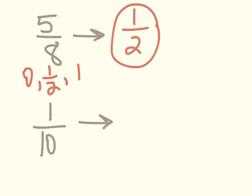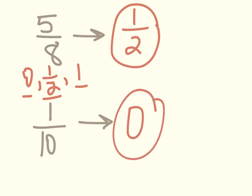Then looking at 1 tenth, doing the same thing — is it closer to 0, 1 half, or 1? 1 out of 10 is a very tiny number; if you change it into a decimal it's very tiny, so it would be closer to 0. It's okay to underestimate, to round down. Remember, you're just using this as an estimation tool, so you're just estimating the sum or difference.